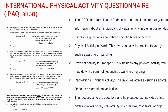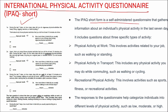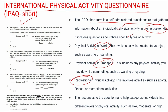Next is the International Physical Activity Questionnaire (IPAQ) Short Form — a self-administered questionnaire gathering information about an individual's physical activity over the last seven days. It includes three specific activity types: physical activity at work (walking, standing), physical activity in transport (walking, cycling), and recreational physical activity (sports, fitness, recreational activities). Responses categorize individuals into low, moderate, and high levels of physical activity.